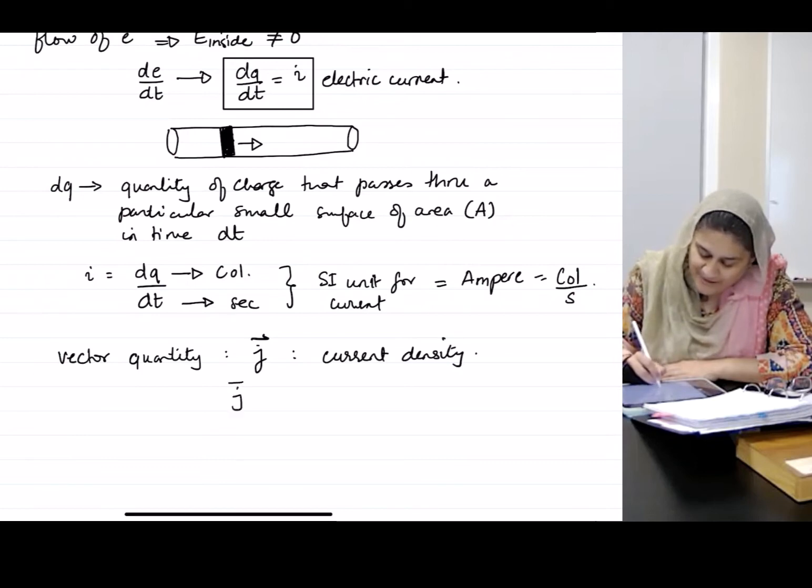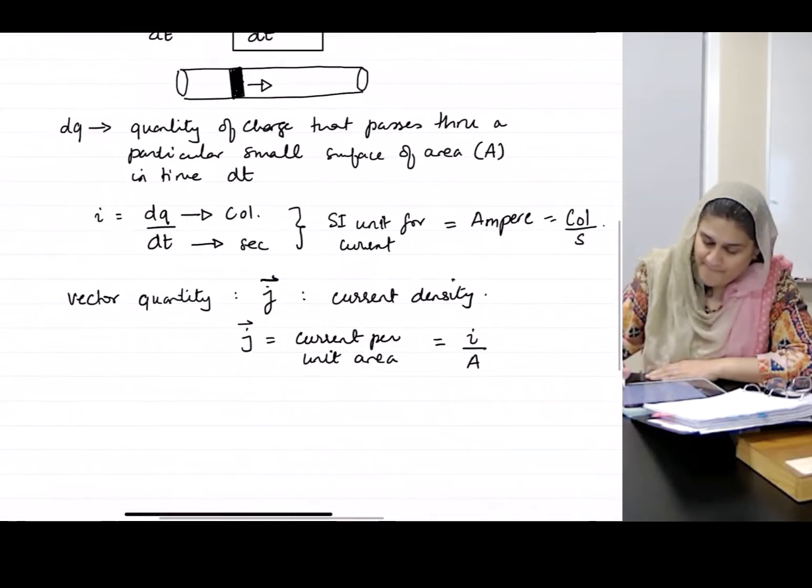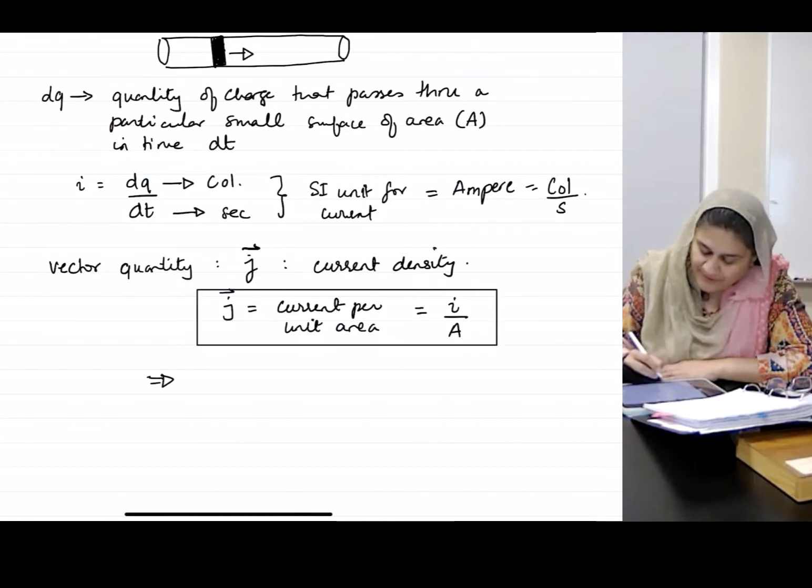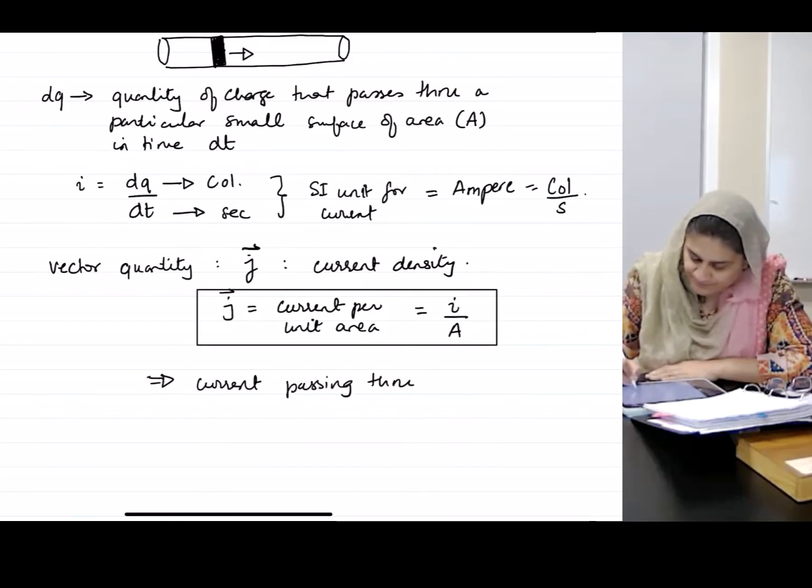Defined as current per unit area, I can also call it I over A, which implies I can also call current passing through a surface the integration of J dot dA.